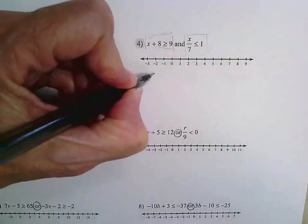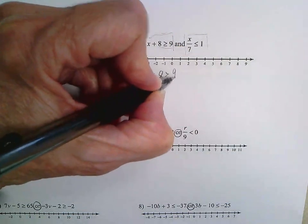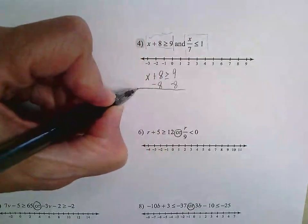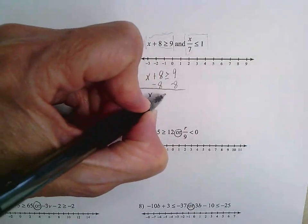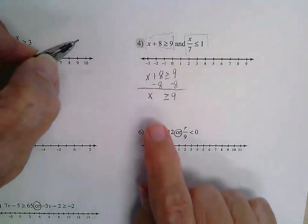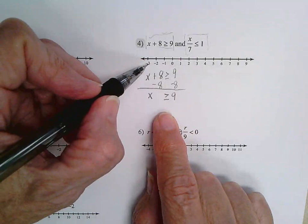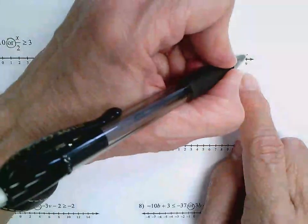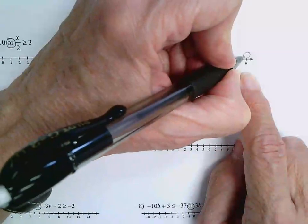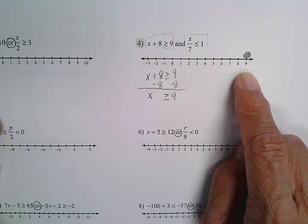So on this first one, number four, I'm going to subtract eight from each side. I'm going to be left with X is greater than or equal to nine. So just like with regular inequalities, I'm just going to come up to my number line, find nine, put a circle there, and since it has an equals sign, I have to fill in that circle to show that it's greater than or equal to nine.